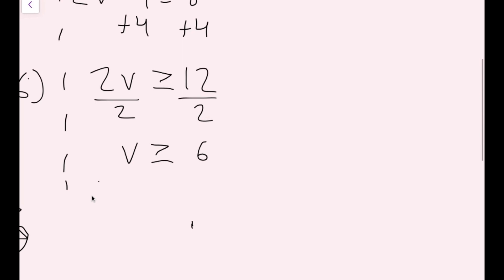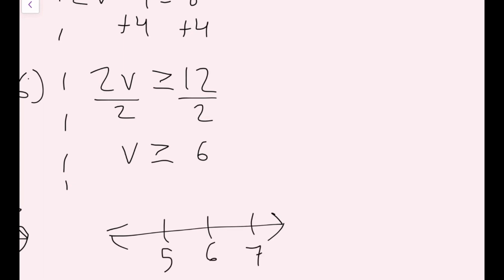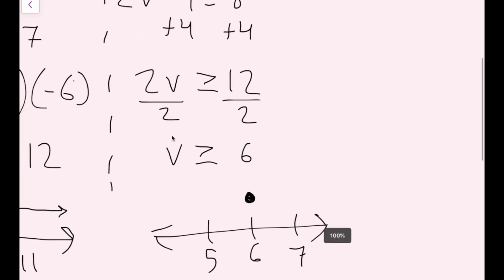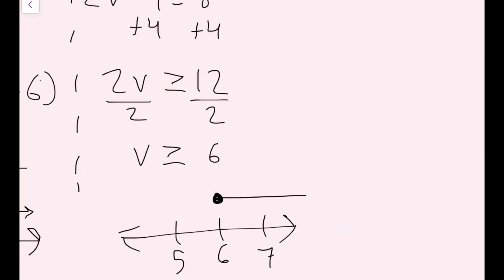To graph this, I'll draw my number line with 5, 6, and 7. I'm going to have a closed circle because we do have this being equal to 6 or greater than 6. So I will have my arrow go to the right. This represents all the solutions that would make this inequality true — any number that is 6 or larger plugged in for v would make this inequality true.